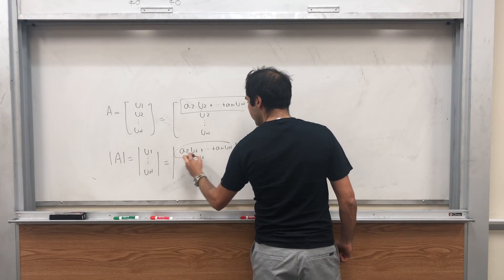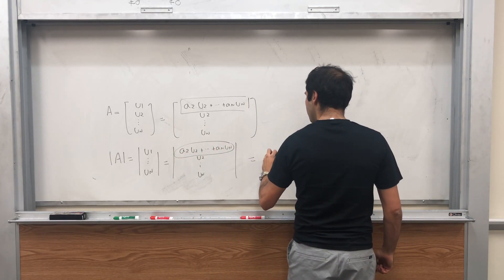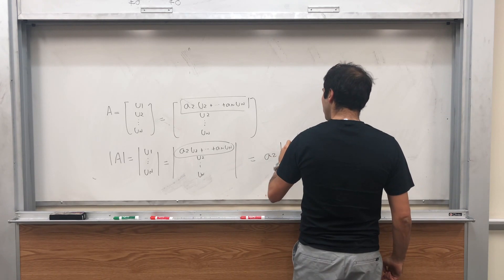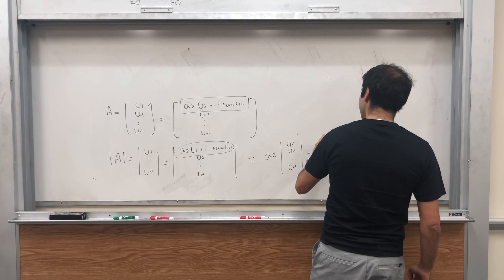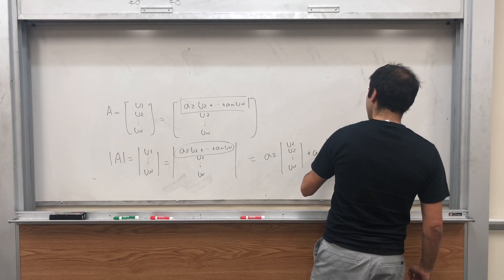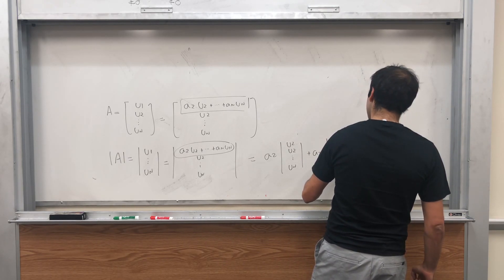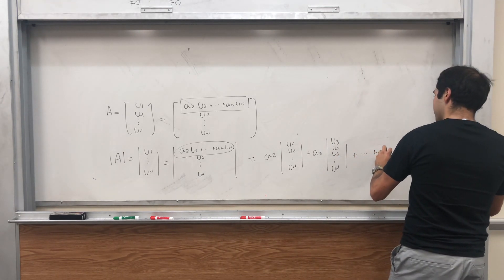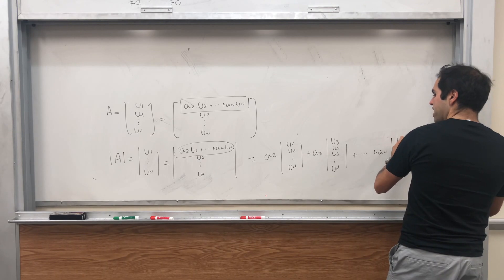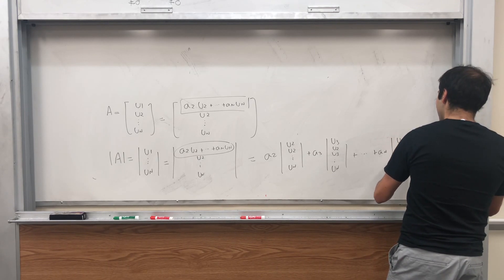And now it is linear in the first row. So this becomes A2 times determinant of U2, U2, UN, plus A3 times determinant of U3, U2, U3, UN, up to AN times determinant of UN, U2, UN.